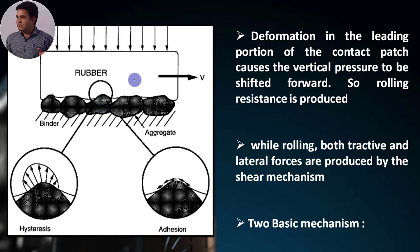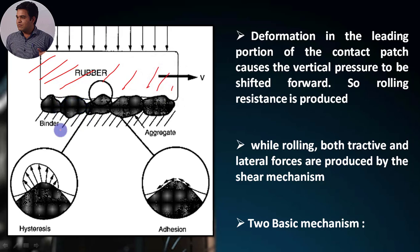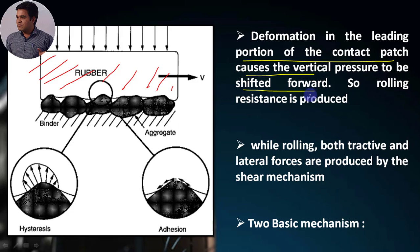Due to the viscoelastic property of the rubber — as you can see in this figure, this is the rubber material of the contact patch of the tyre which remains in contact with the road surface. The dark portions represent the aggregates of the road material such as gravel or concrete. Because of the tyre's viscoelasticity, the deformation in the leading portion of the contact patch causes the vertical pressure to be shifted forward. This center slightly moves and will not lie on the axis of spin, and due to this phenomenon, rolling resistance is produced.